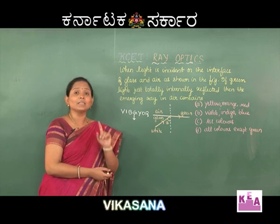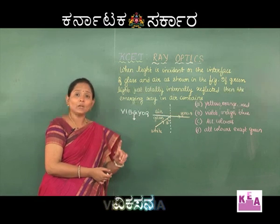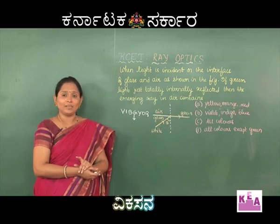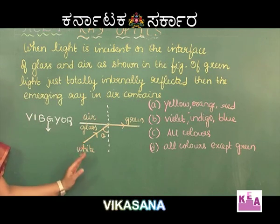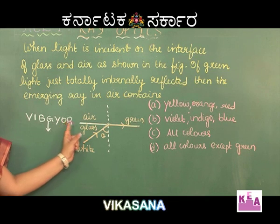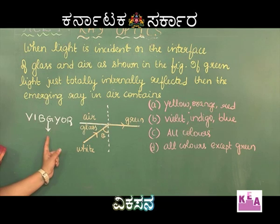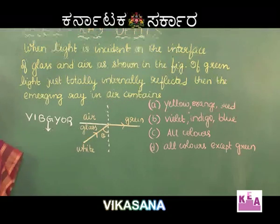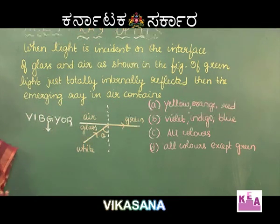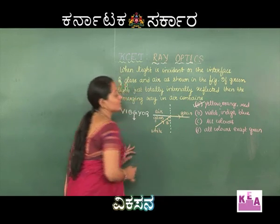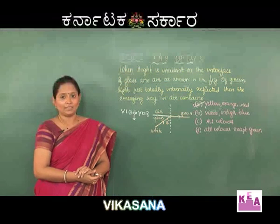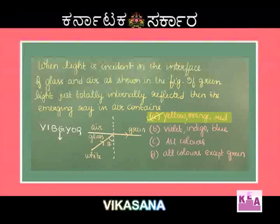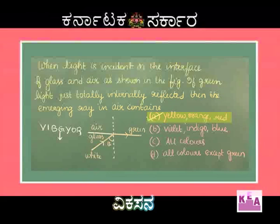The condition for total internal reflection is that the angle of incidence must be greater than the critical angle. Since the critical angle for yellow, orange, and red is greater than the angle of incidence, TIR does not take place for these colors and they emerge out. Therefore the correct option is option A: yellow, orange, and red.